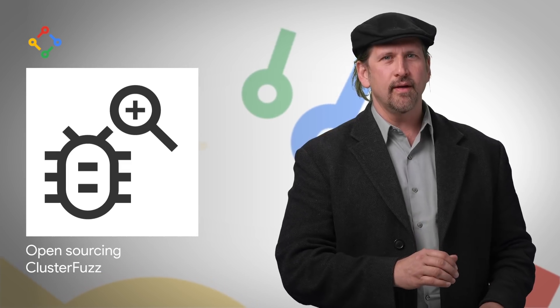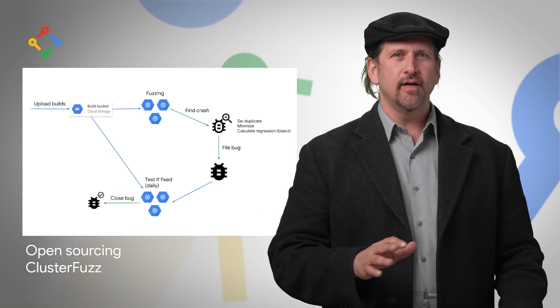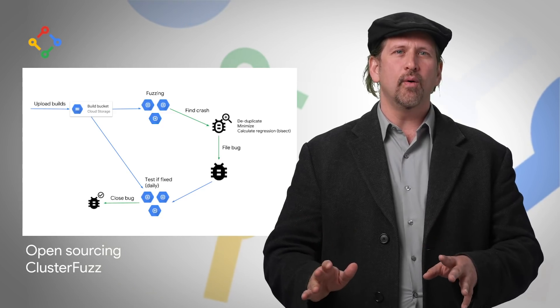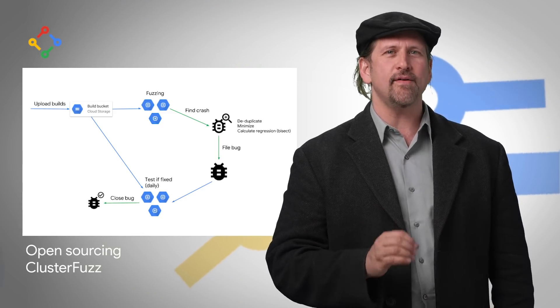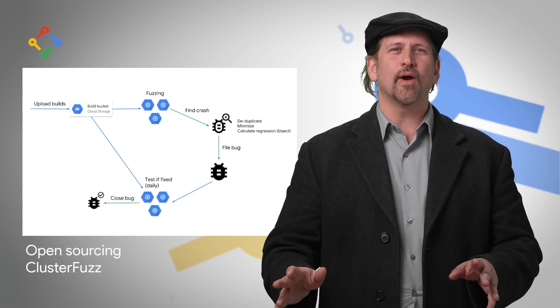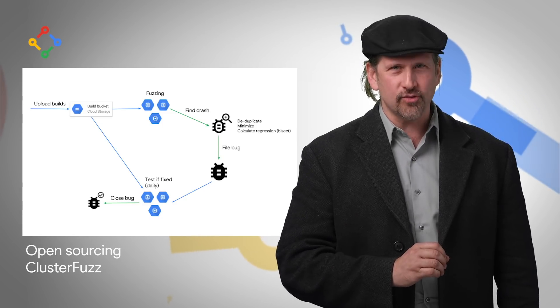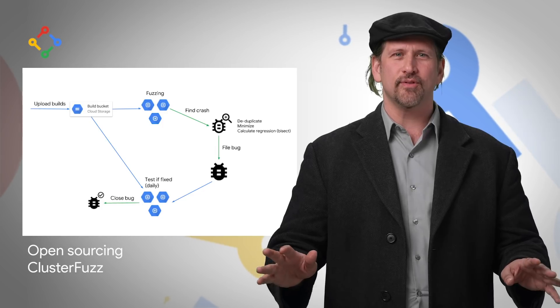Fuzzing is an automated method for detecting bugs in software that works by feeding unexpected inputs to a target program. In order for fuzzing to be truly effective, it must be continuous, done at scale, and integrated into the development process of a software project. To provide these features for Chrome, we wrote ClusterFuzz, a fuzzing infrastructure running on over 25,000 cores. Today, we're announcing that ClusterFuzz is now open source and available for anyone to use.